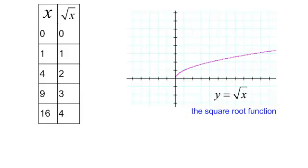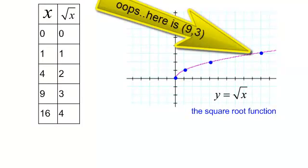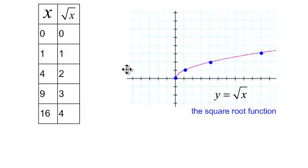Now let's graph the square root function: y equals the square root of x. The square root of 0 is 0; the square root of 1 is 1; the square root of 4 is 2; the square root of 9 is 3. Notice the graph does not appear for any negative x values, because the square root of a negative number is not a real number.